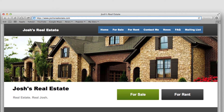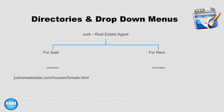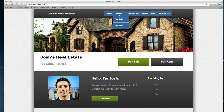But if Josh wanted to group these two items into one category, he can create a directory so that the URLs will be joshsrealestate.com/houses/for-sale.html and joshsrealestate.com/houses/for-rent.html. And his navigation menu might look something like this. This is a good way to organize items on your site and keep your navigation menu clean and simple, while still powerful enough for your visitors to navigate with ease.